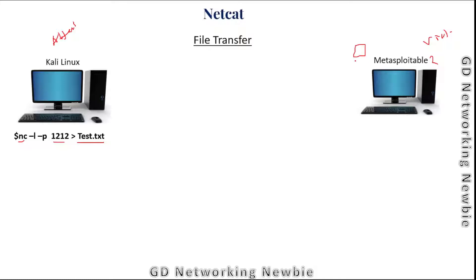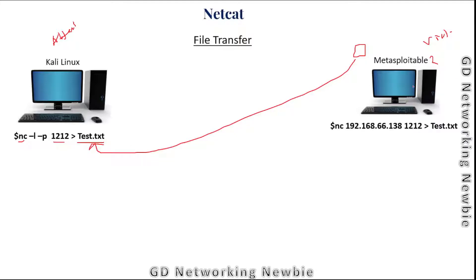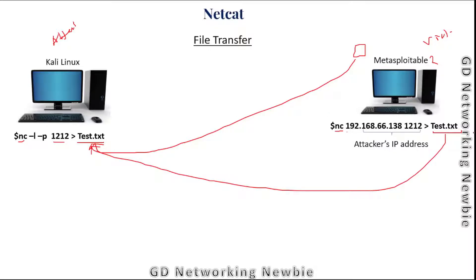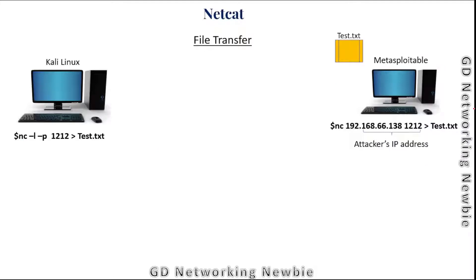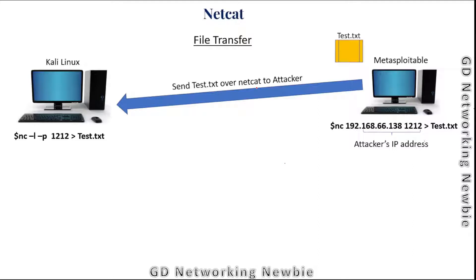The file sent from Metasploitable will be saved under the specified name on the Kali machine. On the victim's machine — the one sending the file — we run NC, give the attacker's IP address, and specify the file to send using the redirection sign. This sends test.txt over netcat to the attacker machine.